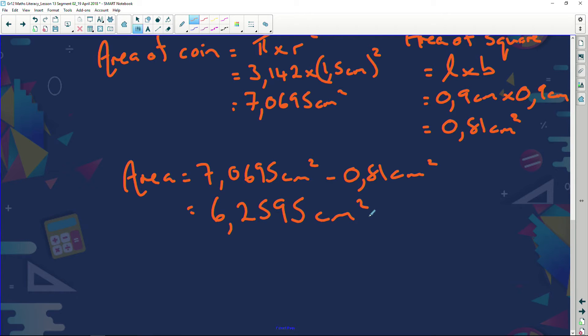But folks, the question did say, round your answer to one decimal place. So when I round that, that 5 is going to affect the 2, and it's going to be 6.3 centimeters squared. Easy? Cool.